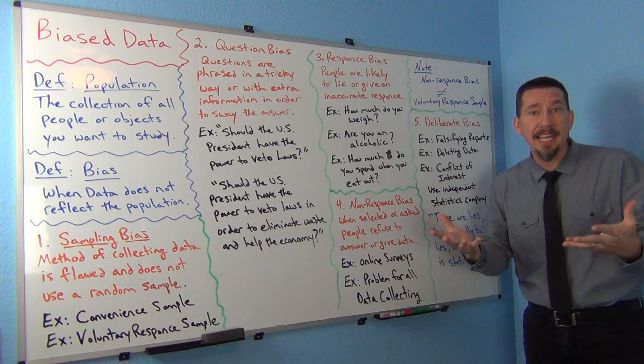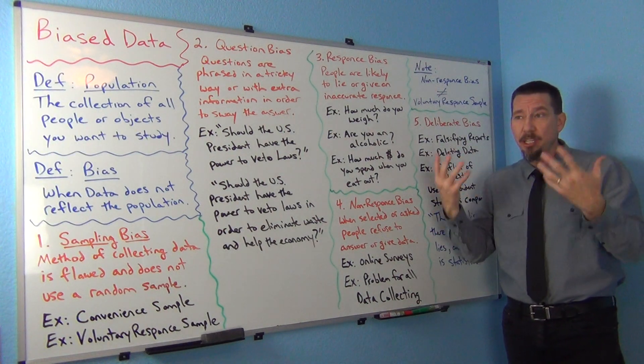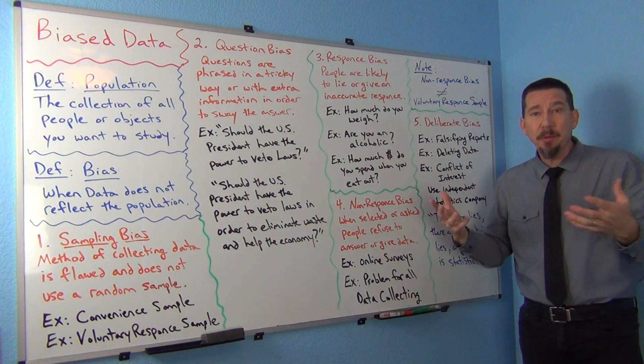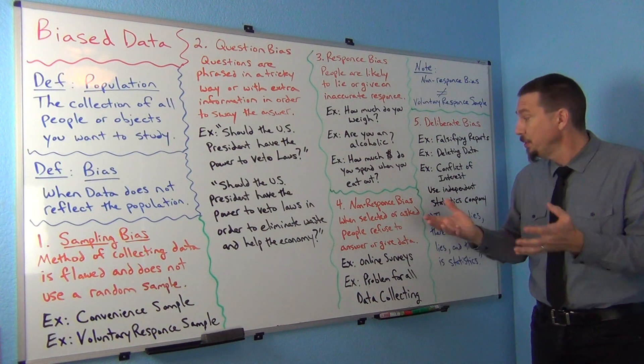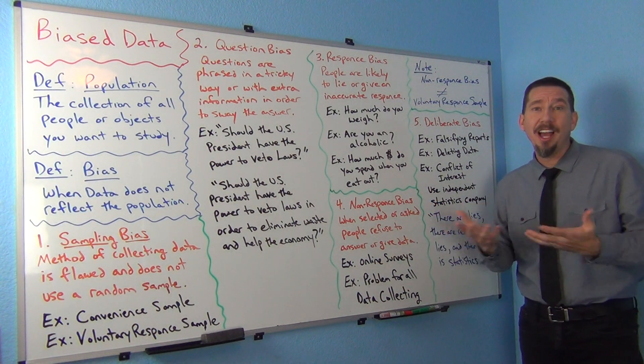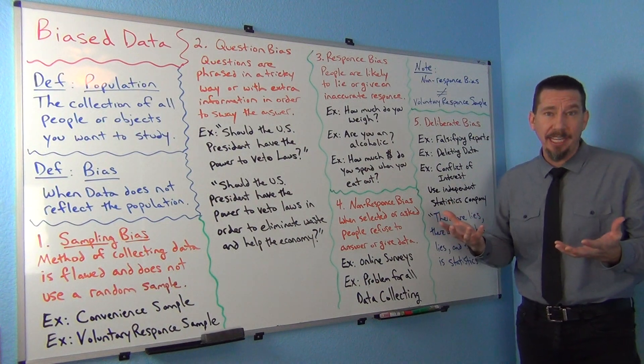To get data on people. Even the U.S. Census. When we have the U.S. Census, there's so many people that don't fill it out. We really need to get data so that we know what's going on, but so many people don't fill it out.